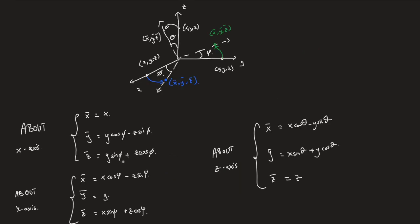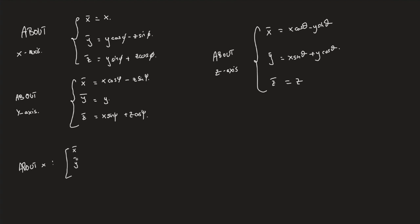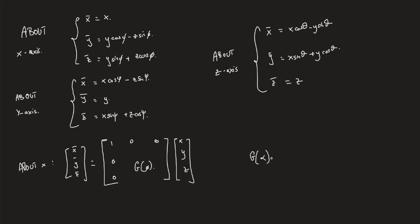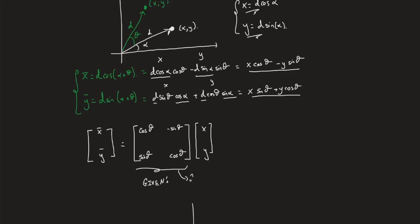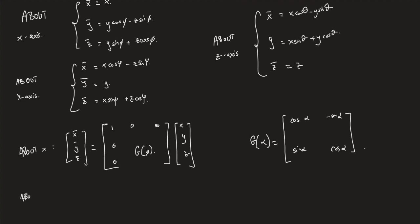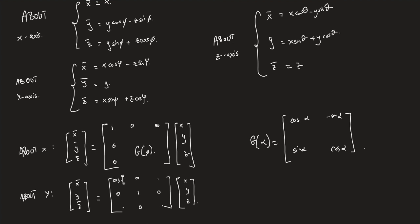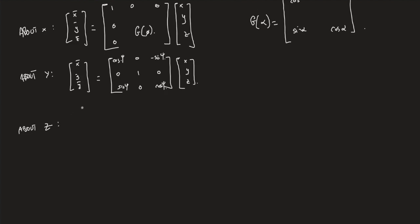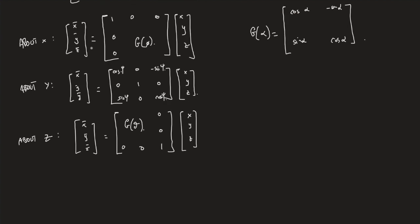How do we express those rotations in terms of matrices? For rotation about the x-axis, [x̄, ȳ, z̄] equals a 3×3 matrix times [x, y, z], where the x-component does not change — a 1 in the (1,1) position — and the 2×2 Givens matrix G(phi) occupies the lower-right block. About the y-axis, a 1 occupies the y-row and the Givens elements G(psi) fill the remaining entries. About the z-axis, z remains unchanged and G(theta) fills the upper-left 2×2 block.